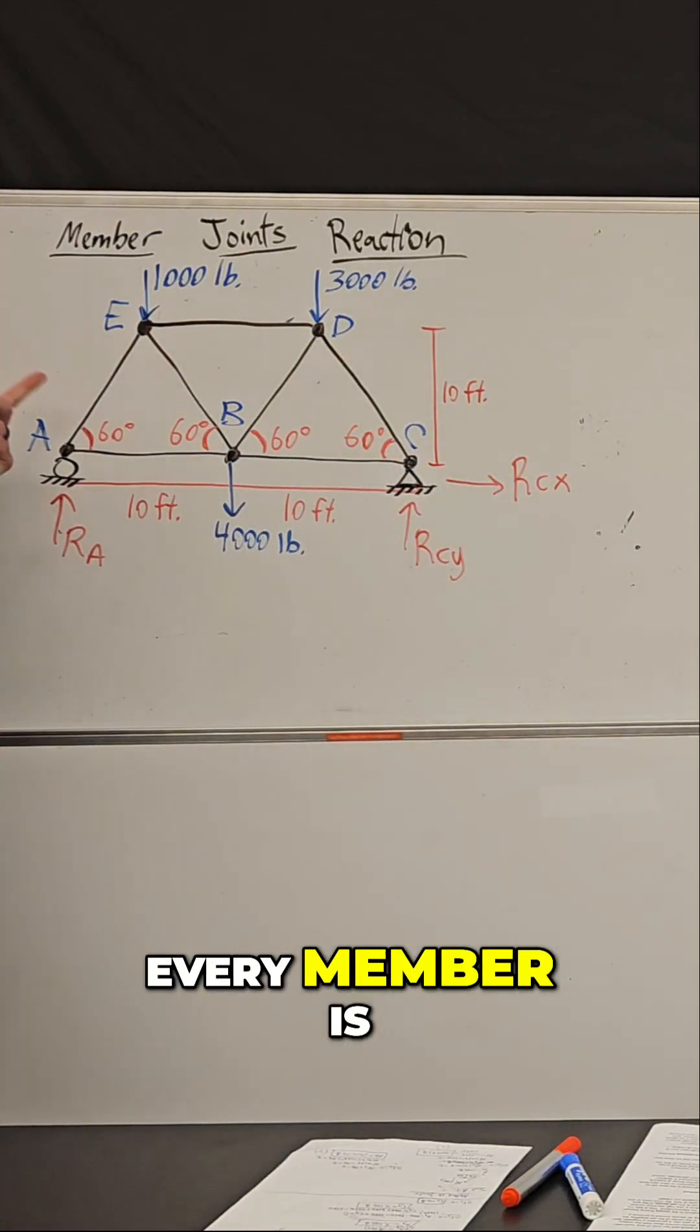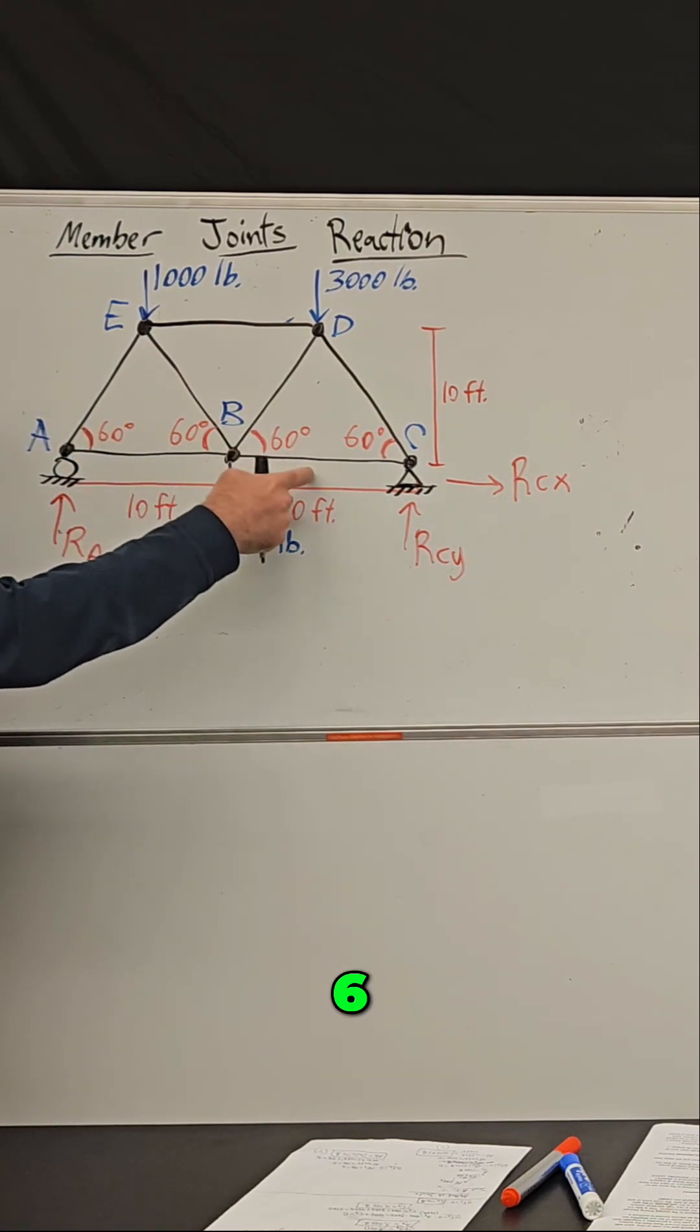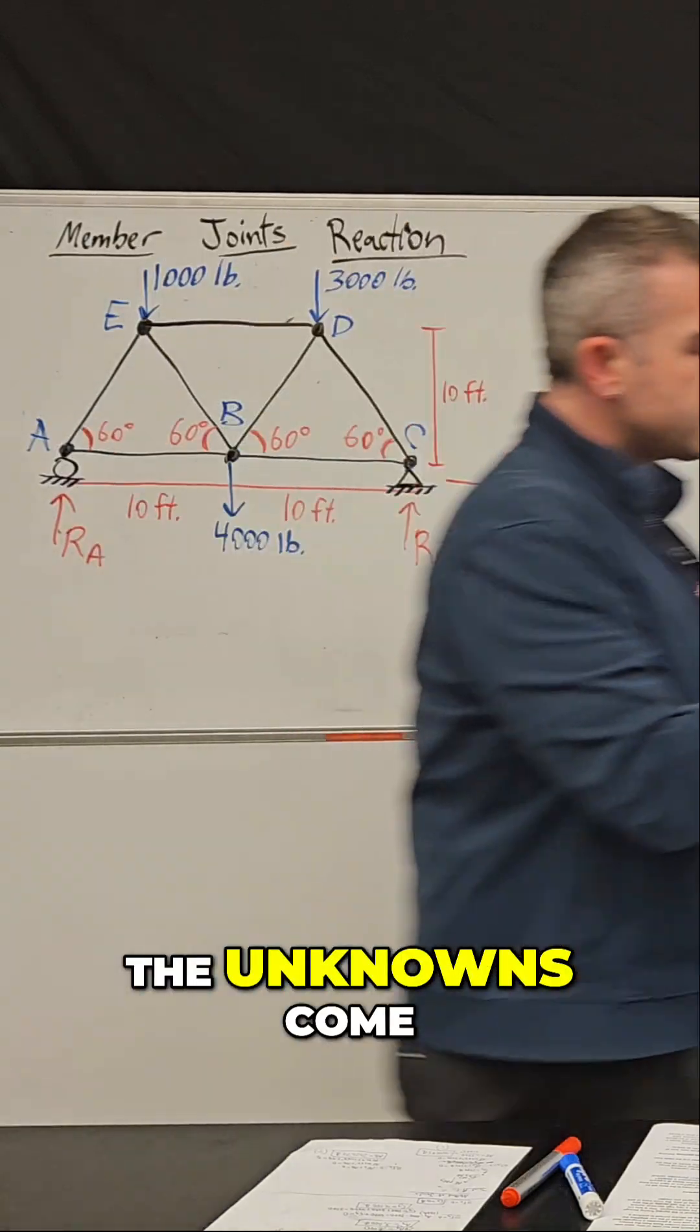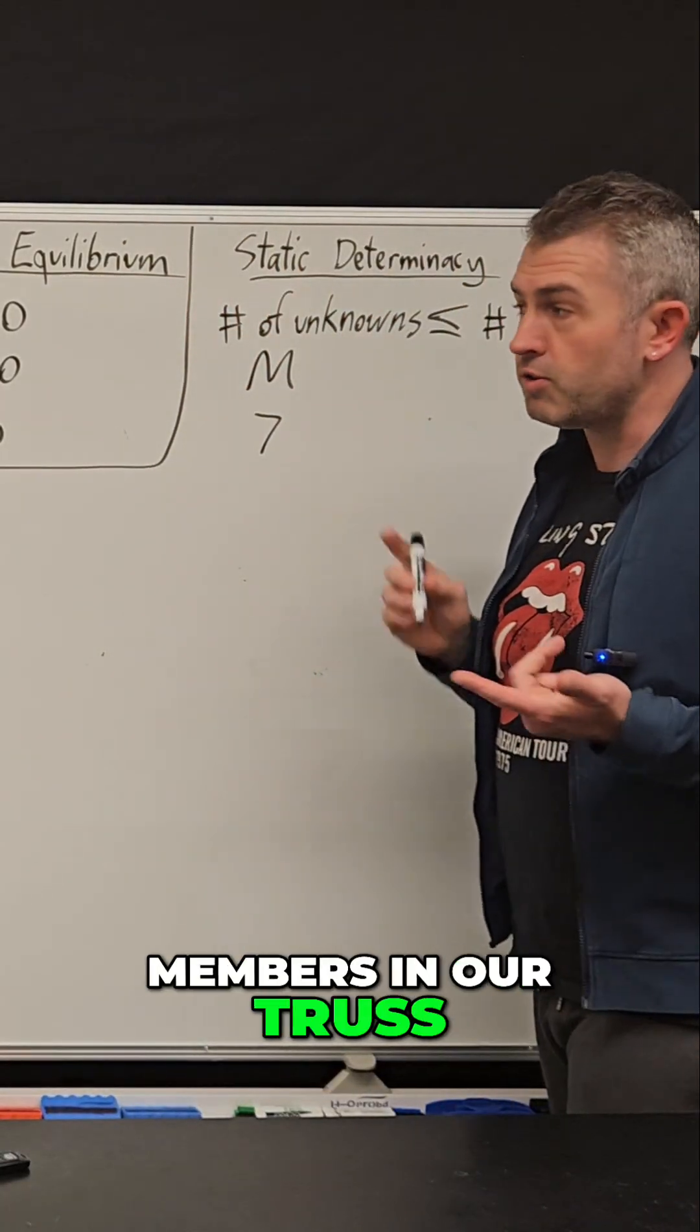Every member is an unknown force, right? So how many members do we have? One, two, three, four, five, six, seven. So the unknowns come from the members. And remember, we have seven members in our truss, seven unknown tension and compression values.